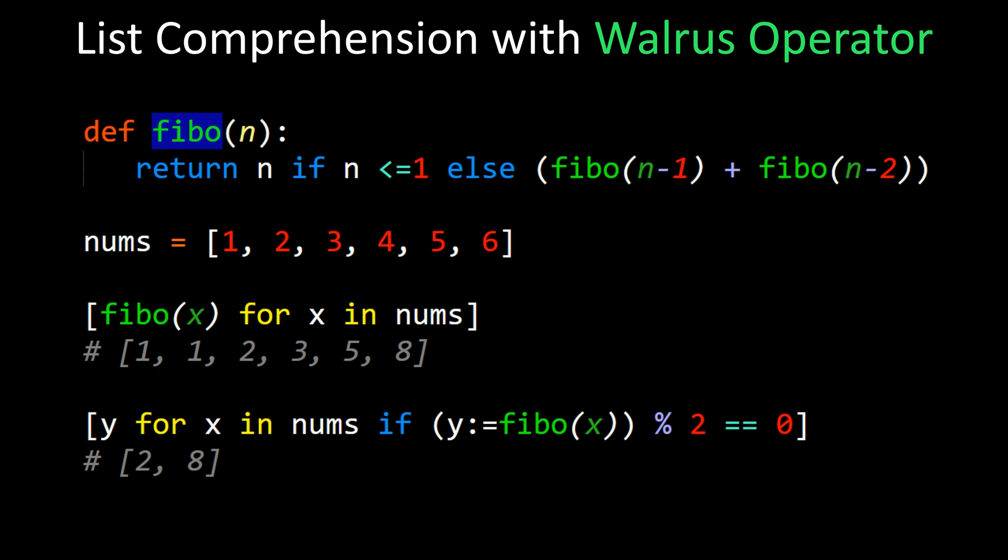And then in the actual output of the list comprehension, we can just use the variable y as opposed to recomputing the fibo function. So the result of this list comprehension that uses the walrus operator is 2 and 8.